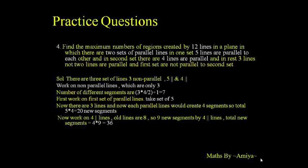So total number of regions = 7 (from 3 non-parallel) + 20 (from set of 5) + 36 (from set of 4) = 63. Note: you can also work on the set of 4 before the set of 5, but always start with the non-parallel lines.